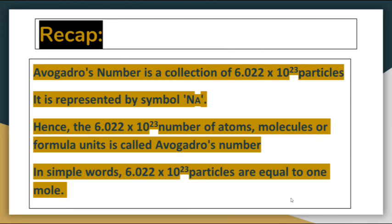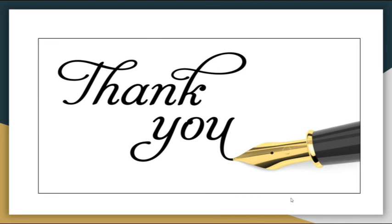To recap: Avogadro's number is a collection of 6.022 × 10²³ particles, represented by the symbol N. The 6.022 × 10²³ number of atoms, molecules, or formula units is called Avogadro's number. In simple words, 6.022 × 10²³ particles are equal to 1 mole. Thank you, students. If you have any questions or queries, please message me.